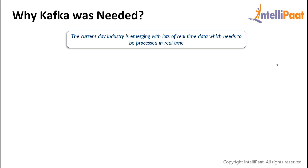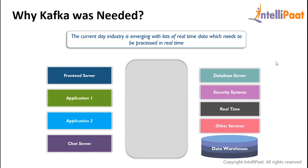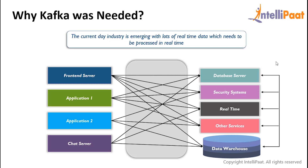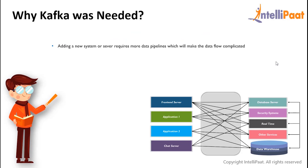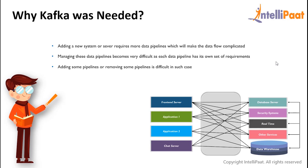Let's understand the need of Kafka. The current day industry generates a lot of real-time data which needs to be processed in real time. These days organizations have multiple servers at front-end and back-end like web or application servers for hosting websites or applications. All of these servers will want to communicate with database servers and thus will have multiple data pipelines connecting all of them. The data pipelines are getting more complex with the increase in number of systems, and adding a new system or server requires more data pipelines which makes data flow complicated. Managing these data pipelines becomes very difficult as each has its own set of requirements, so adding or removing pipelines is difficult in such a case.